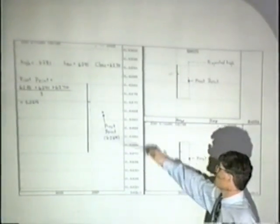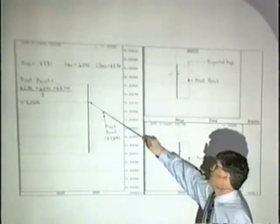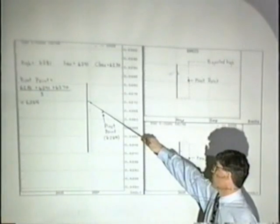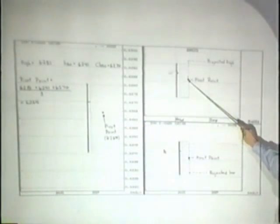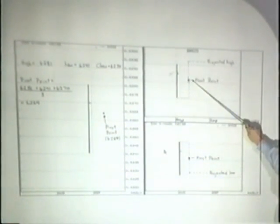So we're taking this price, this price, and this price, dividing by three to get that price. Then what we do to project the high pivot is take the difference between the low and the pivot point to project the high, and the difference between the high and the pivot point to project the low.